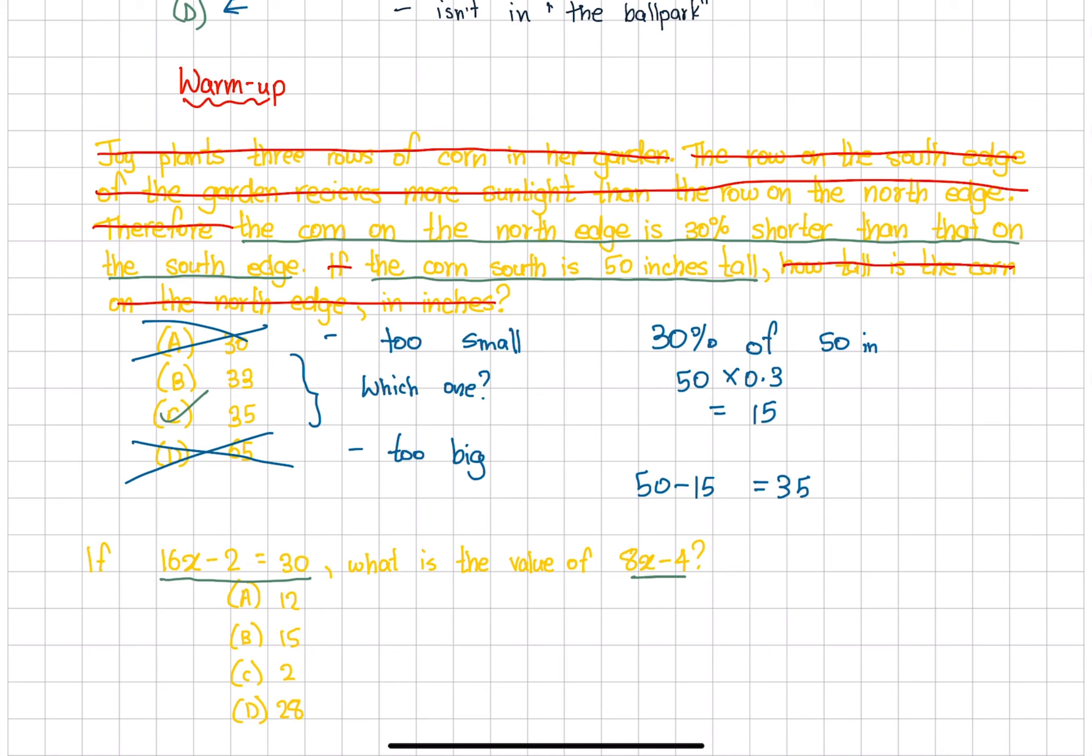Taking our equation 16x minus 2 equals 30, if we divide both sides by 2, that gives us 8x minus 1 equals 15. So 15 really doesn't make sense because half of the answer is 15 and that ignores the minus 4. Looking at 28, that's way too big.